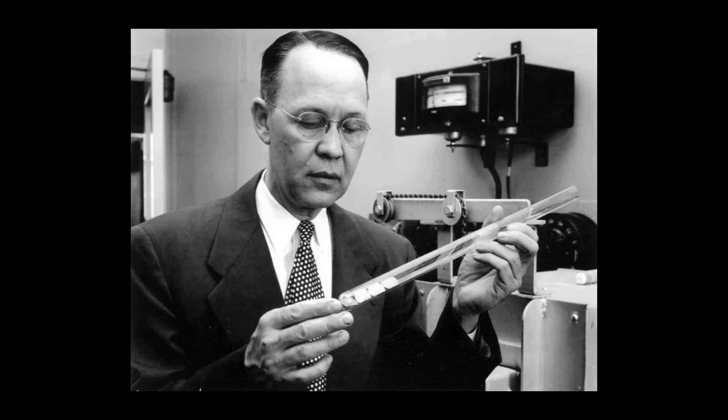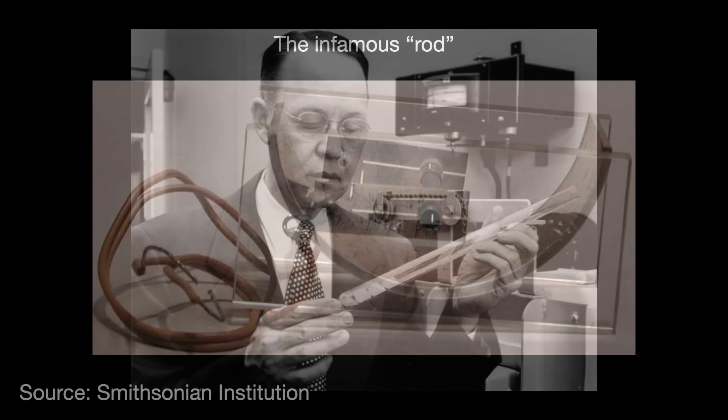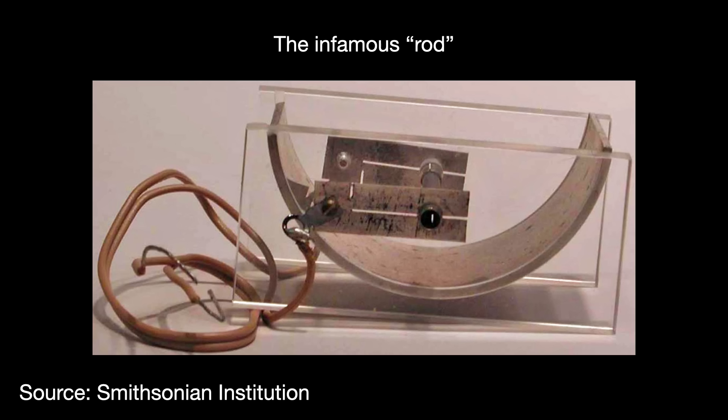One of these ingots, 99.8% pure, was cut into a rod. Ohl ran a conductivity test with his oscilloscope and noticed that the rod generated a peculiar loop on the tool, indicating some form of barrier in the silicon. He figured that the silicon was still not pure enough and set that rod aside.